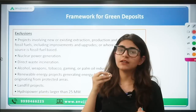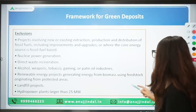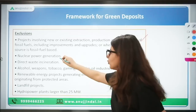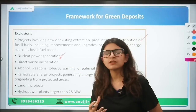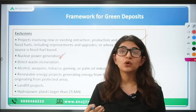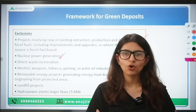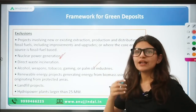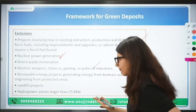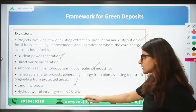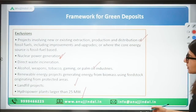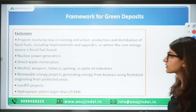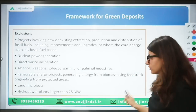RBI has also given certain exclusions — activities towards which green deposit proceeds cannot be utilized. These include nuclear power generation, alcohol, weapons, tobacco, landfill projects, and hydropower plants larger than 25 megawatts.